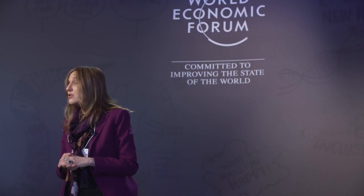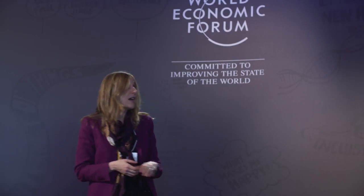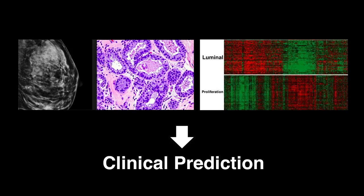Imagine what we can do if we utilize all this information. That's exactly what we are trying to do at MIT. We're taking information about millions of patients, all their raw measurements, and trying to predict their outcomes, their sensitivity to treatment, early diagnosis, and models of disease progression.